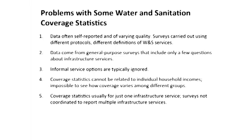In the past, the global community struggled to get good water and sanitation coverage statistics. The data were often self-reported by different national governments with varying quality, and surveys were carried out using different protocols and different definitions of water and sanitation services. Informal service options were often ignored, and it was often hard to get coverage statistics that could be related to the income of an individual household, so it was hard to see how coverage varied for different income groups.